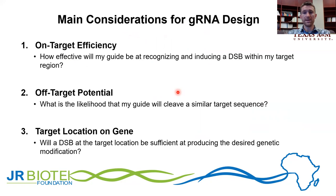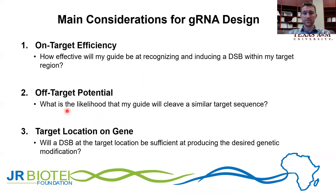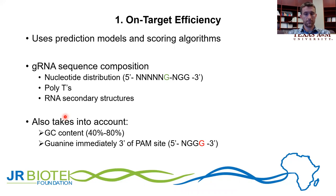When working with genes containing thousands of different nucleotides, there are many potential guide RNAs to choose from. There are three major characteristics to keep in mind when designing your guide. First, on-target efficiency: how effective will my guide be at recognizing and inducing a double-stranded DNA break within my target region? Second, off-target potential: what is the likelihood that my guide will cleave a similar target somewhere else within the host genome, creating an undesirable mutation? Third, target location on the gene: will the double-stranded break at the target location be sufficient at producing the desired genetic modification?